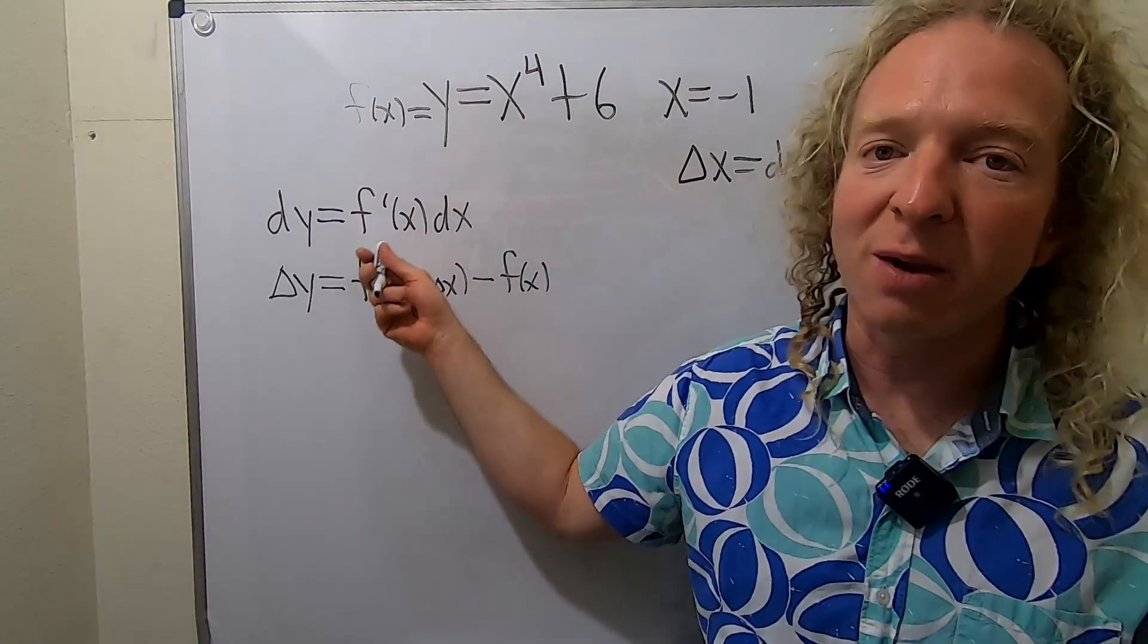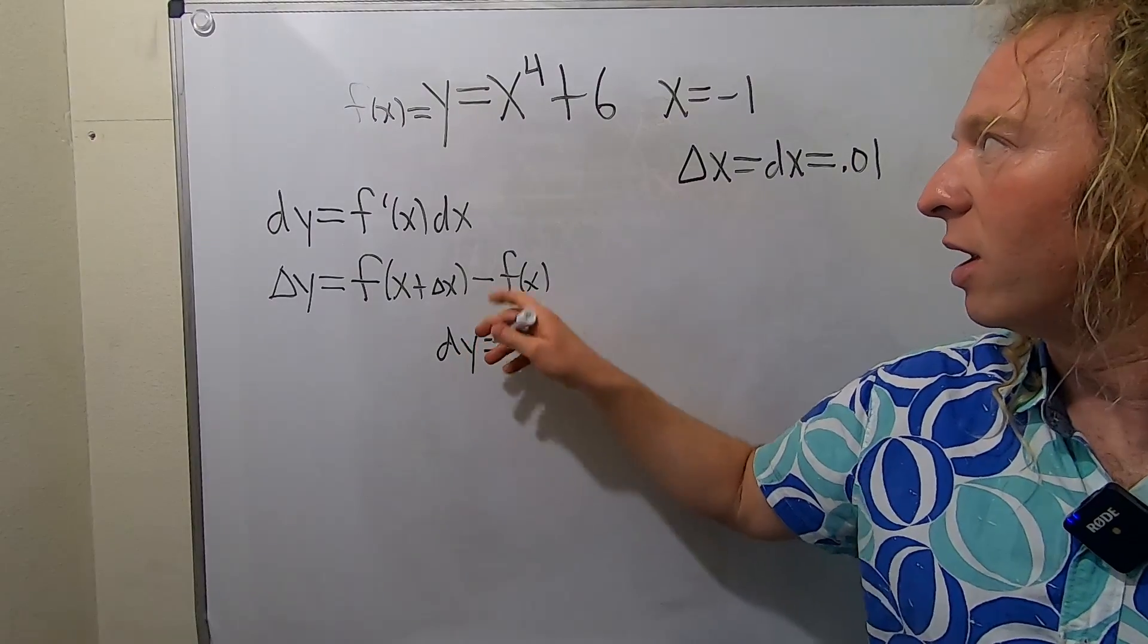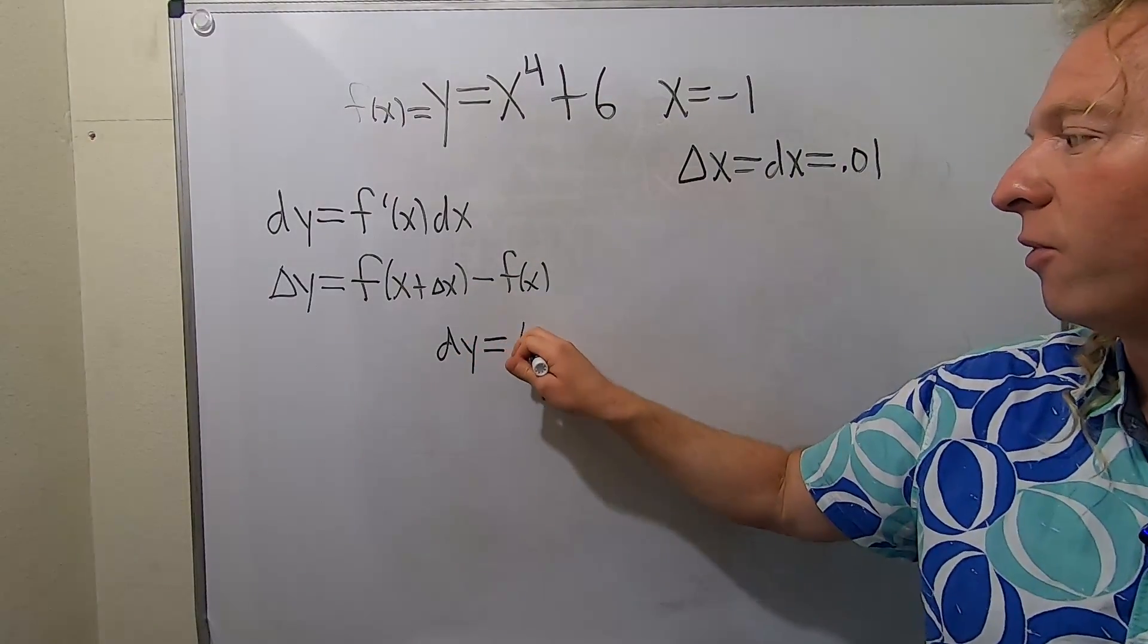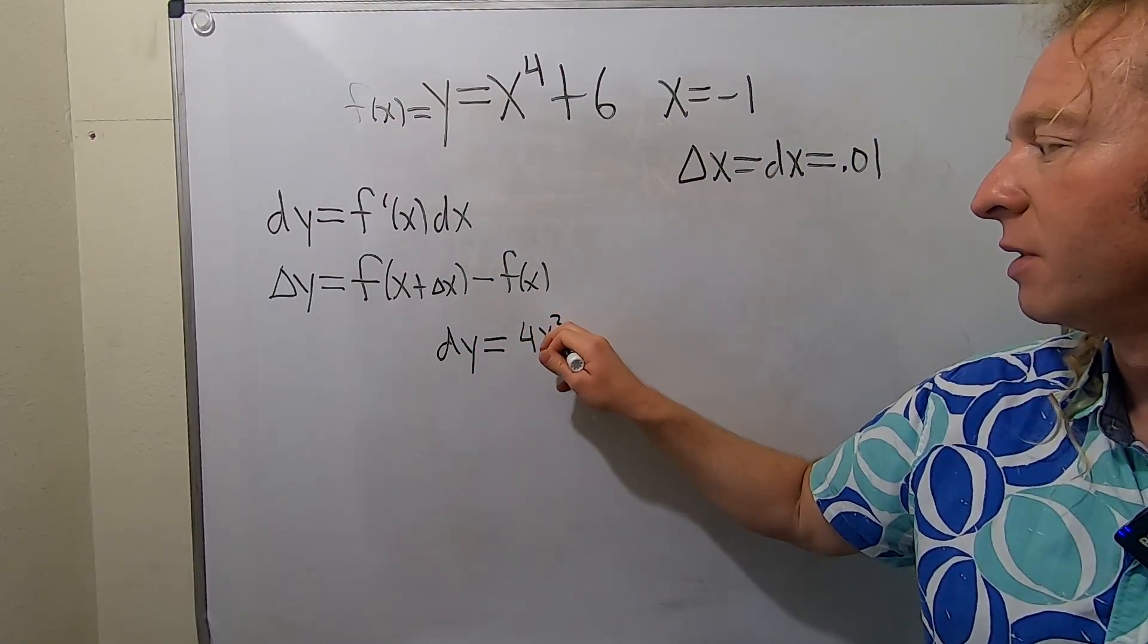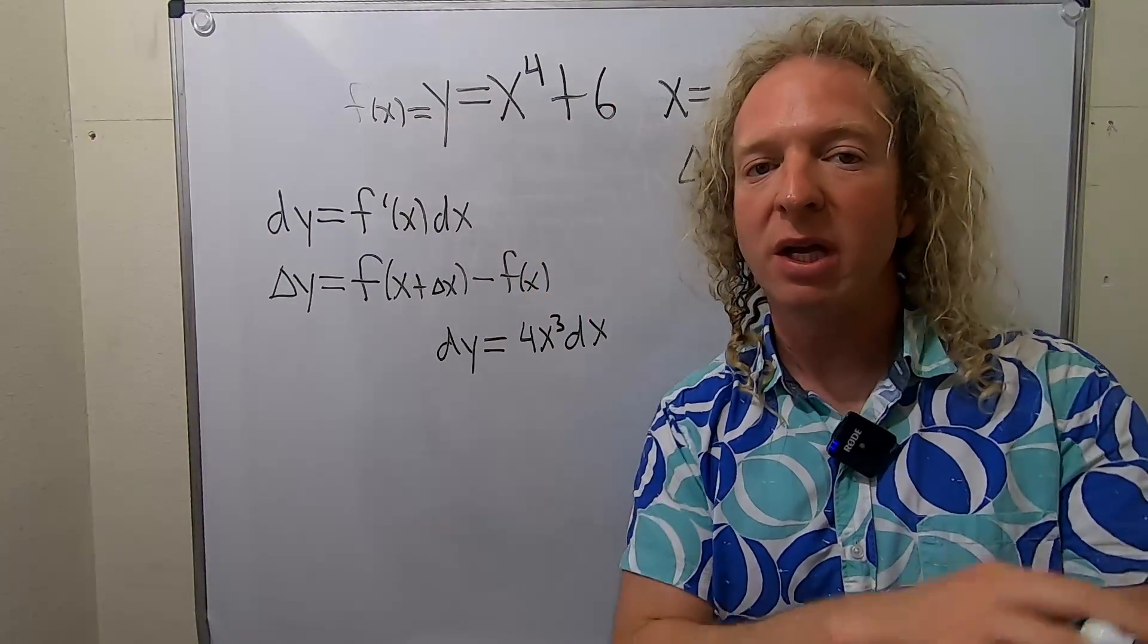Let's compute dy first. dy equals f prime of x dx. The derivative here is simply 4x cubed dx. We don't have to worry about the 6 because its derivative is zero.